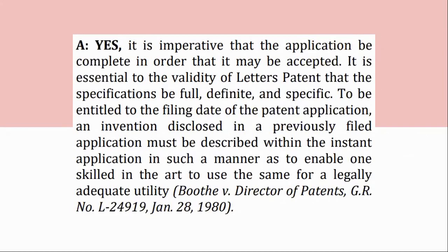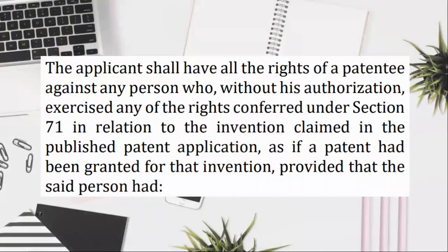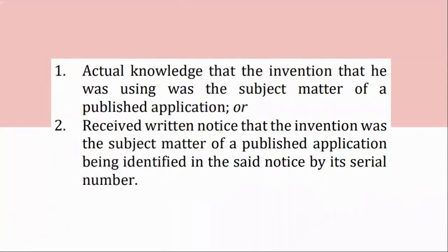First Publication: the applicant shall have all the rights of a patentee against any person who, without his authorization, exercised any of the rights conferred under Section 71 in relation to the invention claimed in the published patent application, as if a patent had been granted for that invention, provided that the said person had (1) actual knowledge that the invention that he was using was the subject matter of a published application; or (2) received written notice that the invention was the subject matter of a published application, being identified in said notice by its serial number. The action may not be filed until after the grant of a patent on the published application and within 4 years from the commission of the acts complained of. IPC, Section 46.